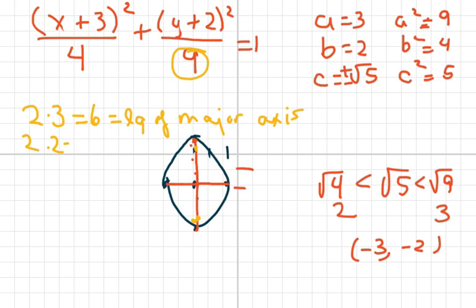And 2 times 2 equals 4 equals the length of the minor axis.